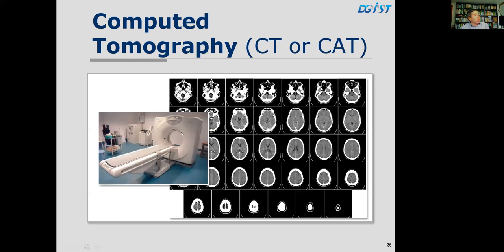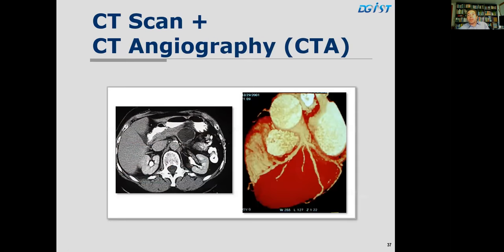A CT scanner consists of the gantry housing the x-ray source and detector, with the patient's bed passing through. Successive tomographic slices of a head CT go from the base of the brain to the top of the skull. CT angiography combines intravenous iodine contrast with rapid CT imaging to visualize blood vessels in detail — for example, coronary CT angiography can assess whether coronary arteries have filling defects or are open.